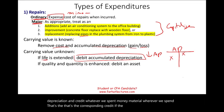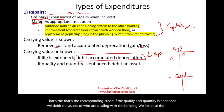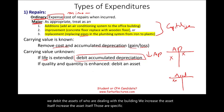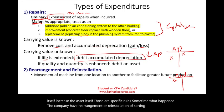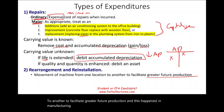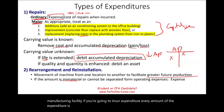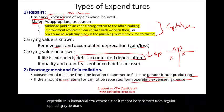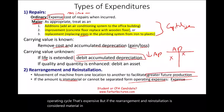If the quality and quantity is enhanced, we debit the asset itself — we increase the asset. Sometimes a company has rearrangement or reinstallation of certain assets, such as moving a machine from one location to another to facilitate greater future production in a manufacturing facility. If the expenditure is immaterial or cannot be separated from the regular operating cycle, it's expensed. But if the rearrangement is material and provides greater future production capacity, it is capitalized.